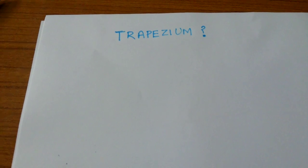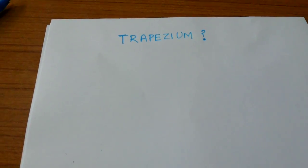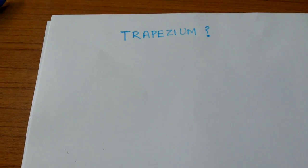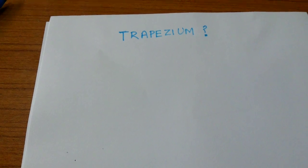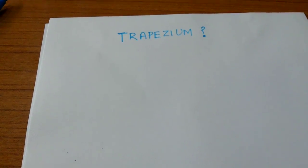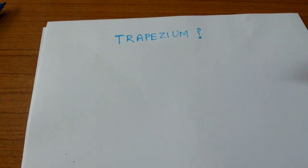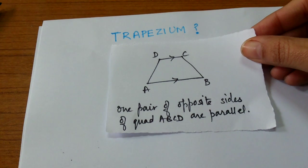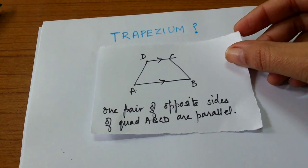What is a trapezium? A trapezium is a quadrilateral in which one pair of opposite sides are parallel.